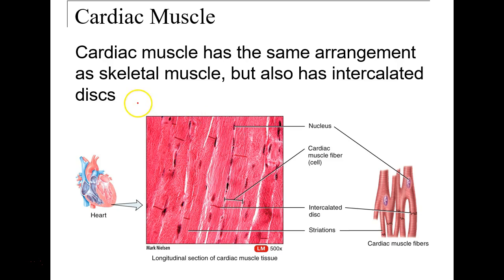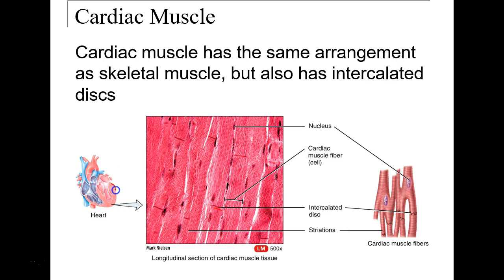Cardiac muscle is arranged so that fibers are connected by intercalated discs. This helps create a conical shape for the heart so that muscle fibers can contract all at once, squeezing blood in one direction at a time.